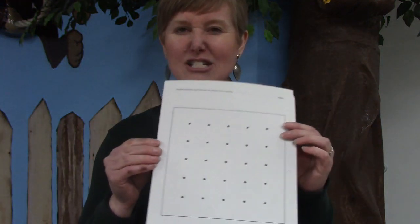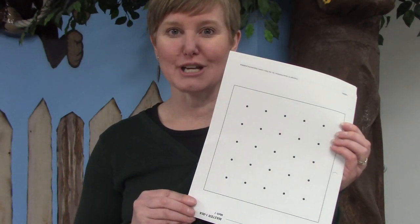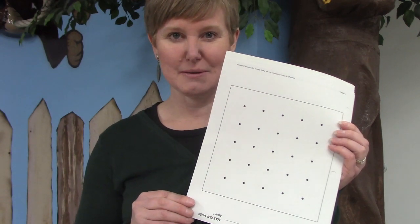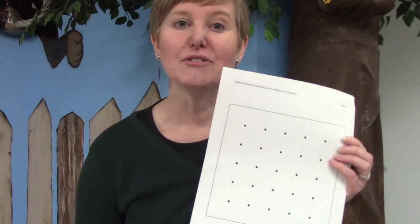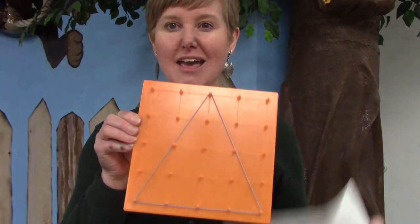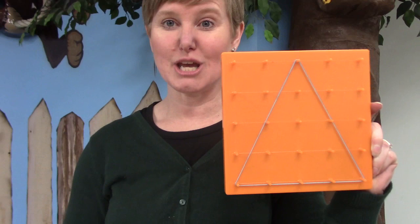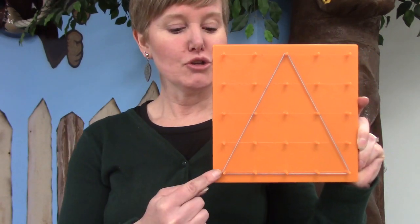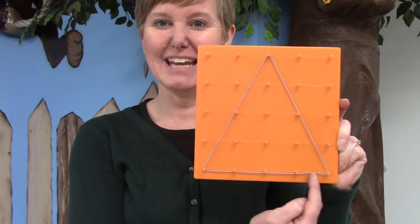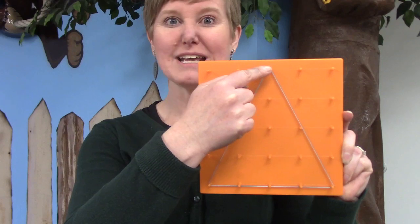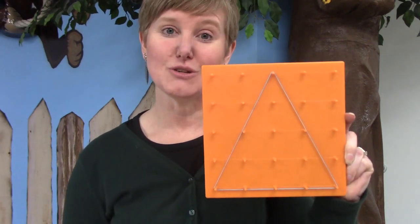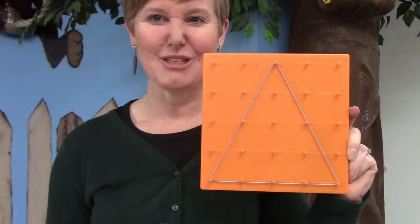Today you're going to be doing one of the sheets in your math packet and that sheet looks like this. It has lots of dots on it and you are going to be trying to make some congruent shapes. I'm going to show you. I have a shape on my board and I want you to try to make this shape on your worksheet. You'll start on the very corner and draw a line all the way to the other side, then go up right to the middle dot and then right down, and if you do that the shape on your sheet will be congruent to the shape that I have here.